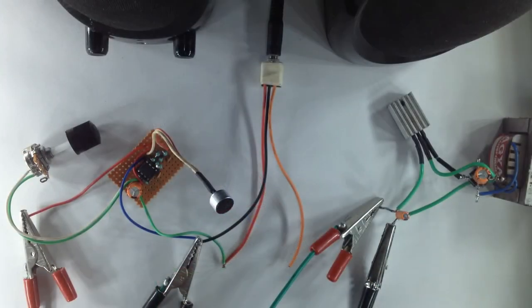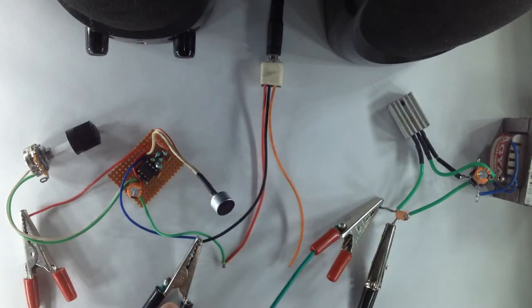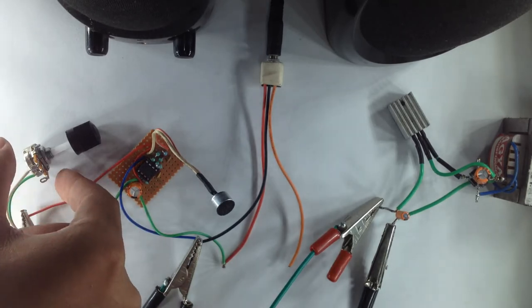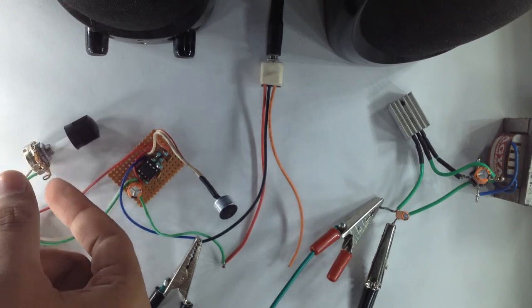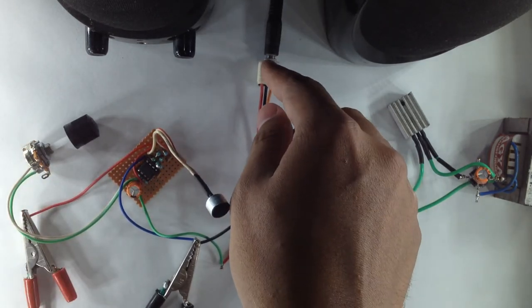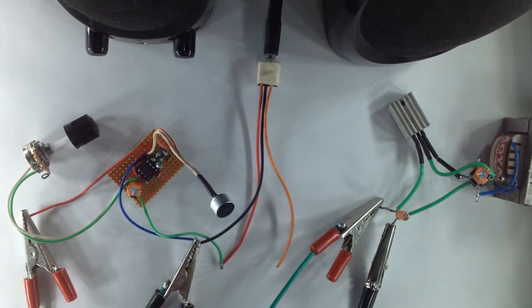So guys, you can see that here is the test setup. Here is the electret microphone and its module, and this is the preamplifier gain, and the output of this amplifier is given to the multimedia speakers. Now I shall power up the circuit.